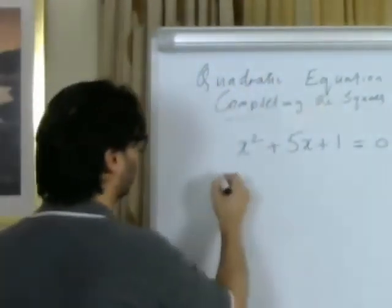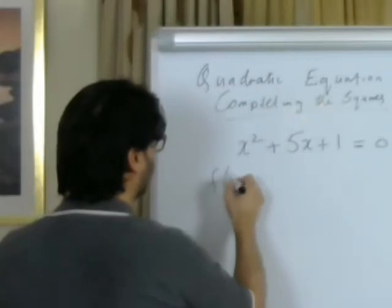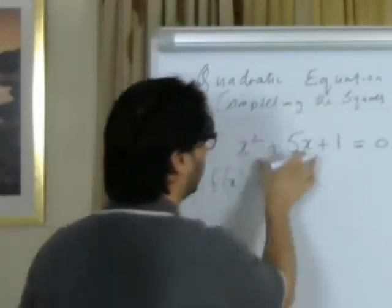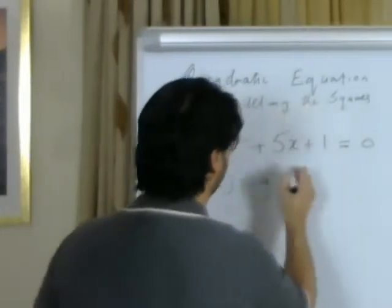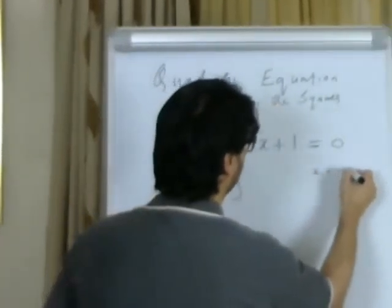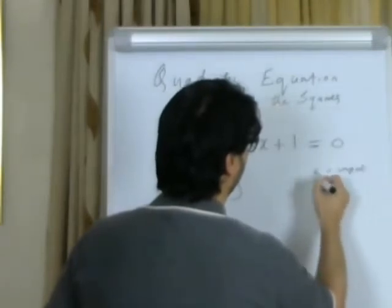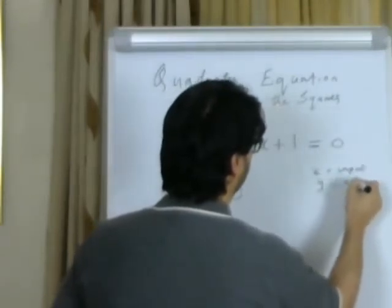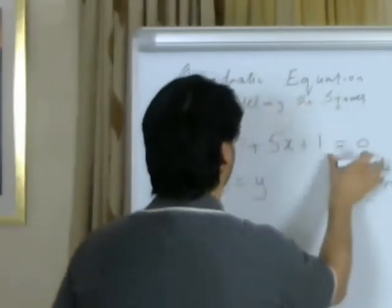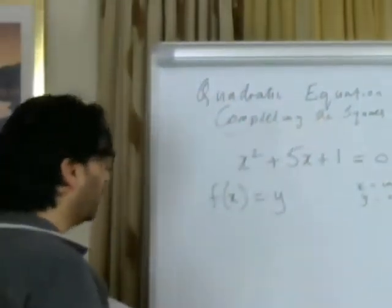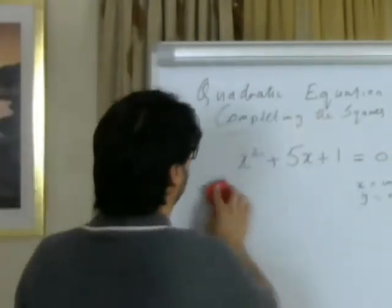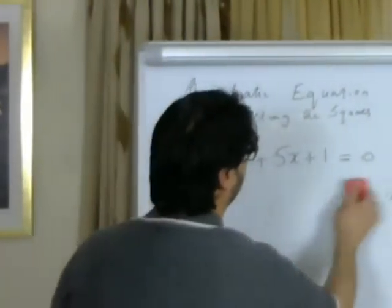This equation acts as a function, so we can also say f(x) equals y. When you put the input values of x, you get the values of y — x is your input and y is your output. So this expression also acts as a function. Let's start by solving the equation using the completing the square method.